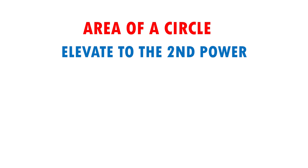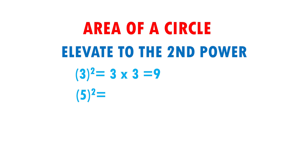Here I have 3 squared. This means that the 3 is going to multiply by itself two times. 3 times 3 gives us 9. Now I have 5 squared. This means that the 5 is going to multiply by itself two times. This is equal to 5 times 5, which equals 25.